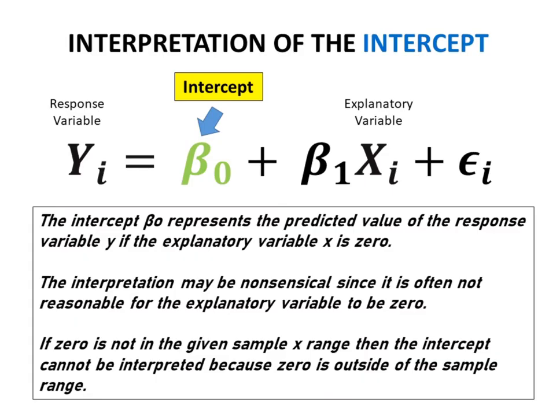Interpretation of the intercept. The intercept represents the predicted value of the response variable Y if the explanatory variable X is zero. The interpretation may be nonsensical since it is often not reasonable for the explanatory variable to be zero. If zero is not in the given sample X range, then the intercept cannot be interpreted because zero is outside of the sample range.